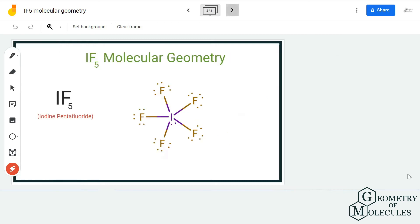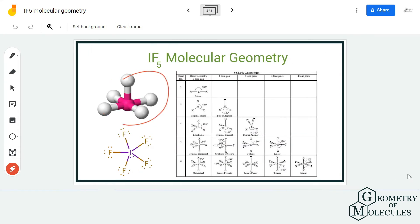Because of the lone pair that is present on the iodine atom, it causes this shape. According to VSEPR theory, the molecule takes up a shape in such a way that there are minimum repulsive forces between bonding pairs and non-bonding pairs of electrons, and hence iodine pentafluoride takes this shape.